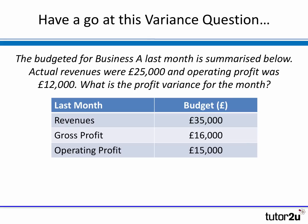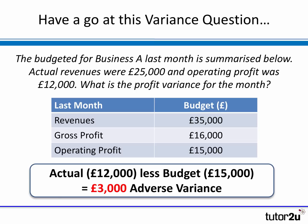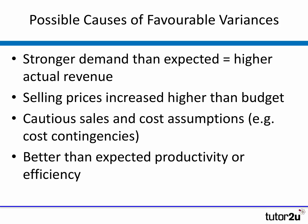Sometimes you're given a bit of information and have to work out the variance yourself. Here's a quick example: the budget for Business A last month shows revenues of £35,000, gross profit of £16,000, and operating profit of £15,000. Actual revenues were £25,000 and operating profit turned out to be £12,000. What was the operating profit variance? The budget operating profit was £15,000 and actual was £12,000 — a difference of £3,000. Profit was lower than expected, so that's an adverse variance of £3,000.